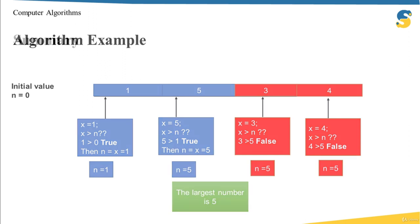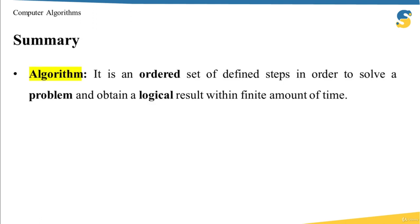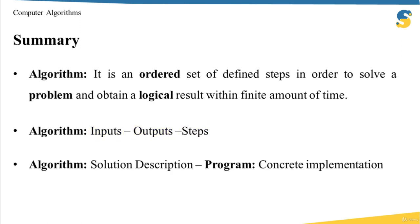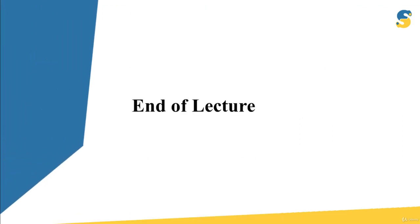Now let me summarize what we have learned in this lecture. First, an algorithm has been defined as an ordered set of defined steps in order to solve a problem and obtain a logical result within a finite amount of time. To formulate any algorithm we have to define inputs, outputs, and the steps that map inputs to the required outputs. We also discriminated between algorithm and program: an algorithm is a solution description, whereas the program is the concrete implementation using one of the programming languages. Thank you very much for your time, and if you are available, join me in the next lecture.